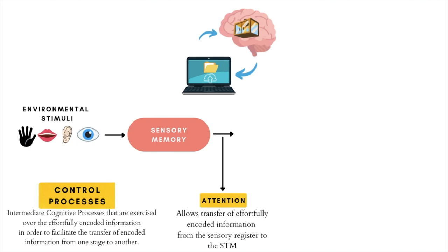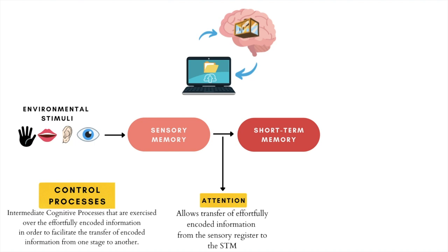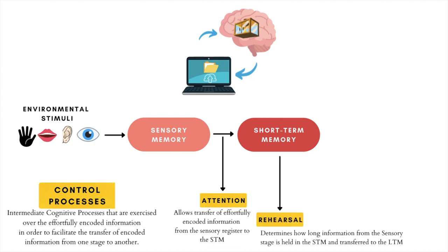The model then proceeds to the next storage unit, which is the short-term memory or STM stage. The capacity of the STM is low, and information in this stage is only held for a short period of time — which is where this unit gets its name. Because of the short-term nature of this storage unit, it is key that information in the STM is subject to the next control process, which is active rehearsal.